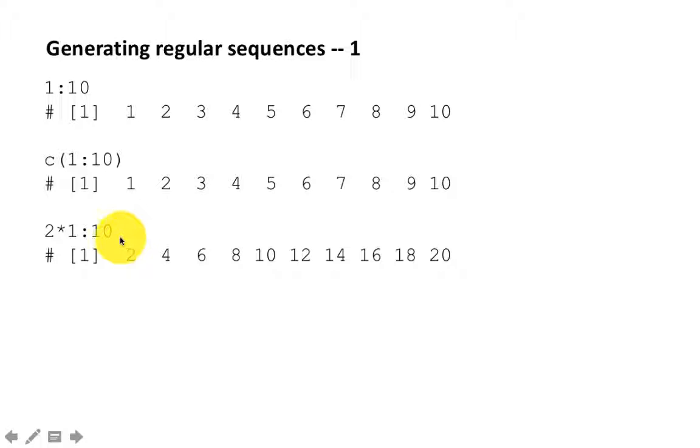Why didn't it first multiply 2 by 1 and then generate the sequence 2 to 10? It didn't do that because now here you have two operators: multiplication and the colon operator.